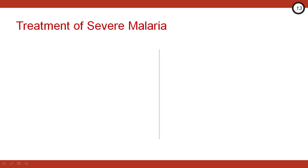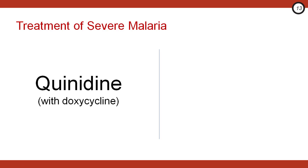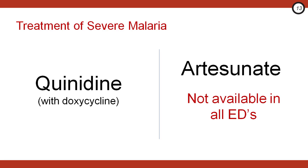For treatment of severe malaria, the antimalarial options typically used include: one, quinidine with doxycycline, or two, artesunate. In a Cochrane review, artesunate was shown to be superior to quinidine in reducing mortality from malaria. However, it's not available in all emergency departments, so you might be limited to whatever's available. Proceed with caution with IV quinidine because it can be cardiotoxic, so these patients should be on cardiac monitors.